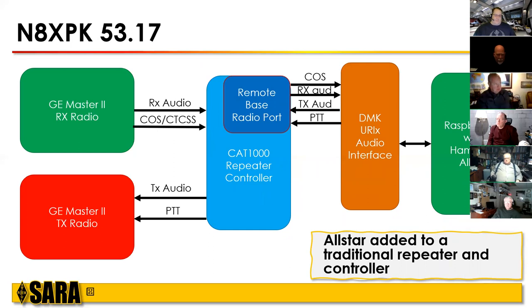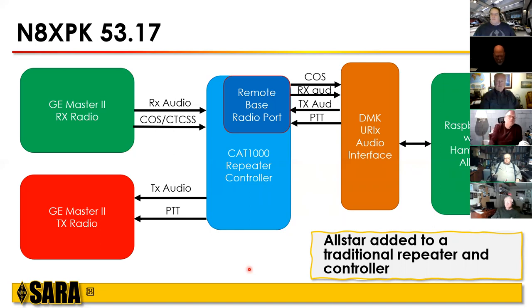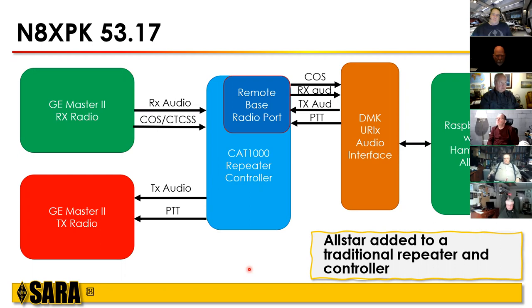Here's a different approach — Marty's 53.17 repeater. On the left again we have a radio: a GE Master 2 receiver and transmitter. Marty has a very conventional CAT 1000 repeater controller — those have been for sale for about 25 years — and that runs the repeater on a day-to-day basis. Grafted onto that, we've connected the same thing we have on 3.9: the DMK URI sound card interface to a Raspberry Pi. In Marty's case, the day-to-day repeater operation — timeout, courtesy tones — all comes from the CAT 1000 controller, and the Raspberry Pi and sound card are treated like a remote base radio.